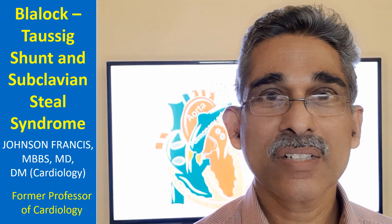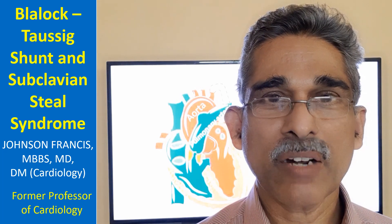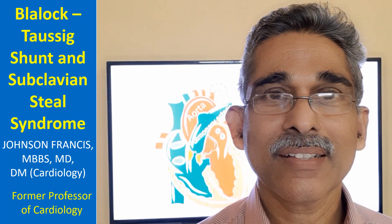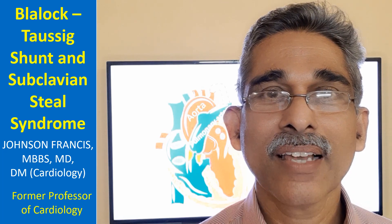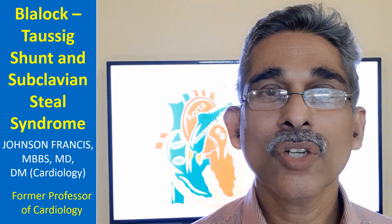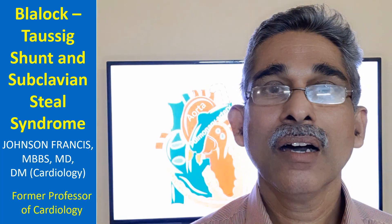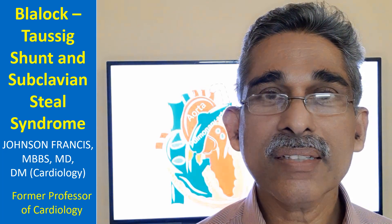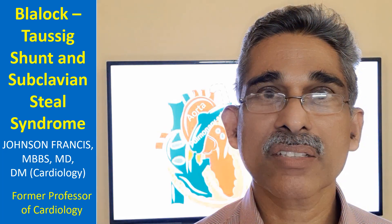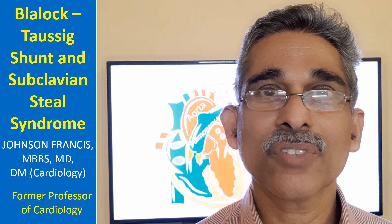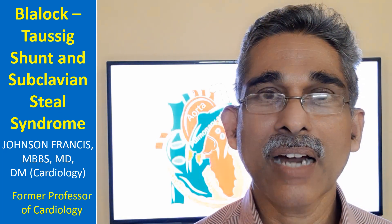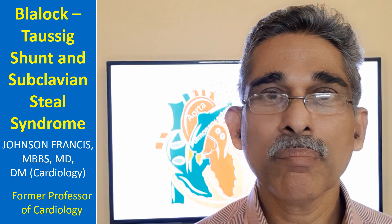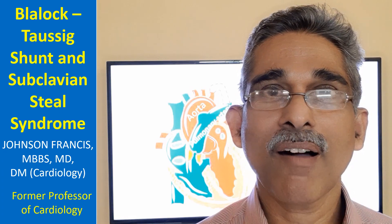The Blalock-Taussig shunt was designed to improve pulmonary blood flow and systemic oxygen saturation, thereby decreasing cyanosis in infants with cyanotic congenital heart disease and low pulmonary blood flow. In those with severe pulmonary stenosis or pulmonary atresia, there was worsening of cyanosis when spontaneous closure of the ductus occurred in the newborn period. So it was thought that an artificial systemic-to-pulmonary shunt could improve pulmonary blood flow and systemic oxygen saturation.